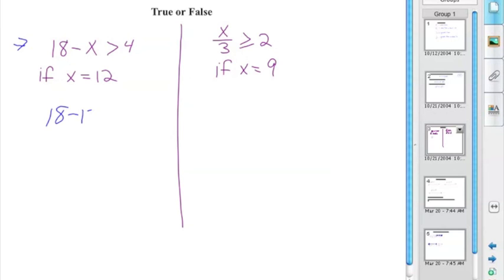18 minus 12 is greater than 4. In reality, what you're saying by substituting in the 12 for x is, I hope this math is greater than this math from way back when you had to check your equations. So 18 minus 12 is 6 greater than 4. Is 6 greater than 4? Yes. So this example is true.